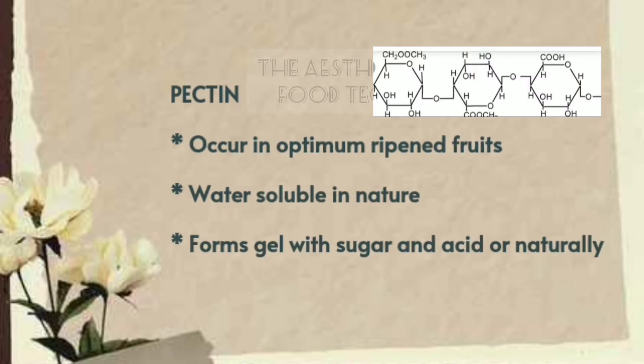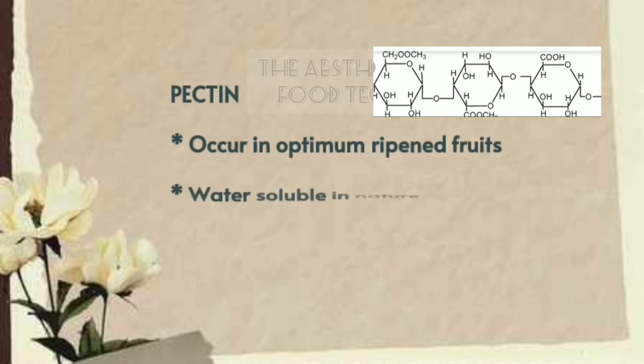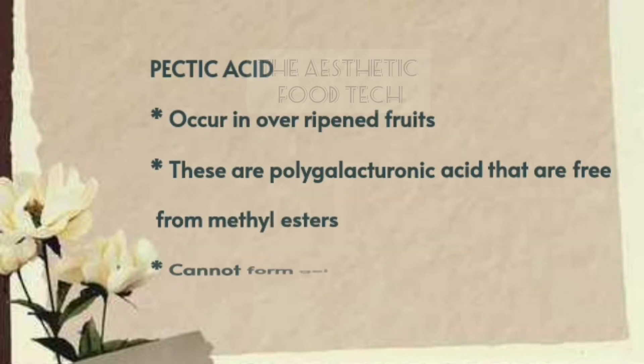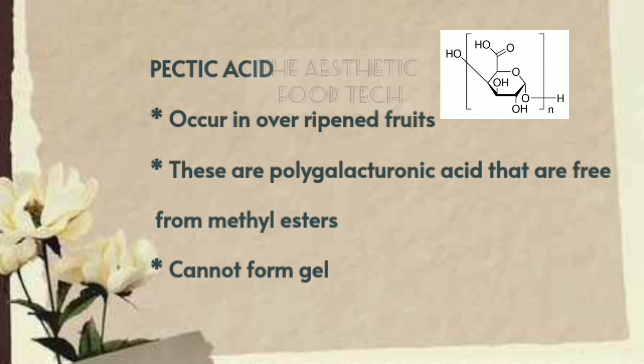Pectin mainly occurs in optimum ripened fruits. The main peculiarity is that pectin is water soluble and has the ability to form a firm gel either with acid and sugar, or naturally.